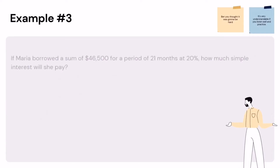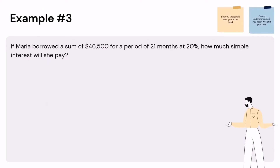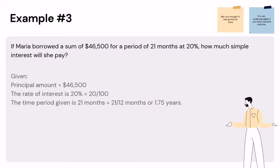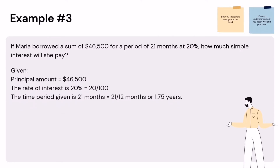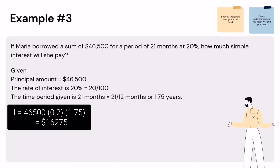Example 3: If Maria borrowed a sum of $46,500 for a period of 21 months at 20%, how much simple interest will she pay? Given: principal is $46,500, rate is 20% or 0.2, time is 21 months or 1.75 years. Using the formula I = P × R × T: 46,500 × 0.2 × 1.75 = $16,275. Therefore, Maria is going to pay $16,275.